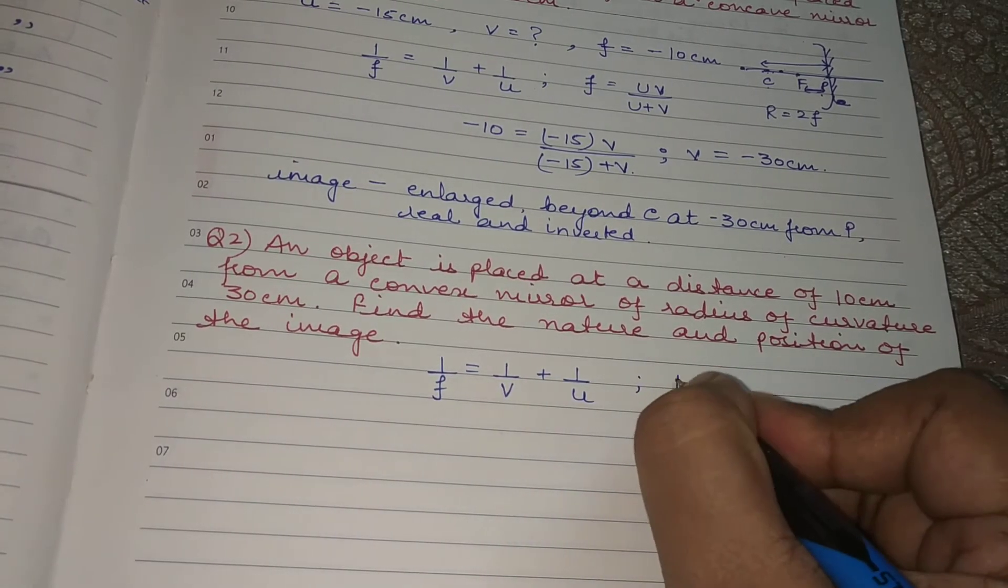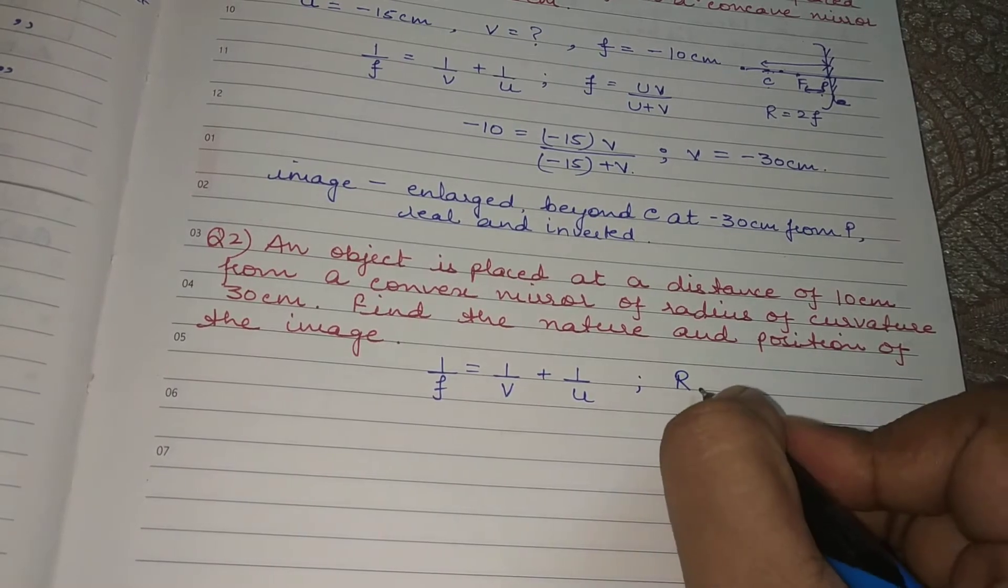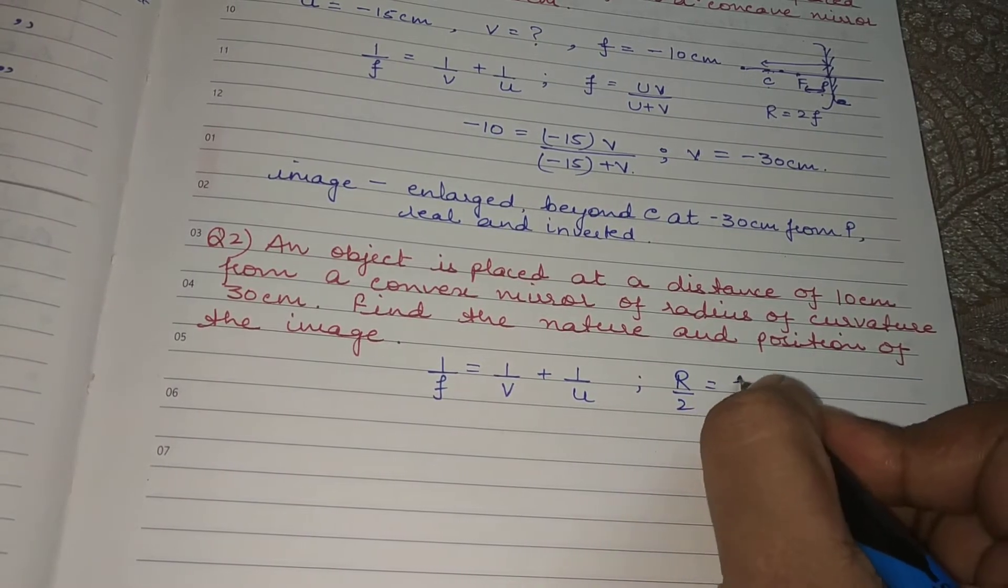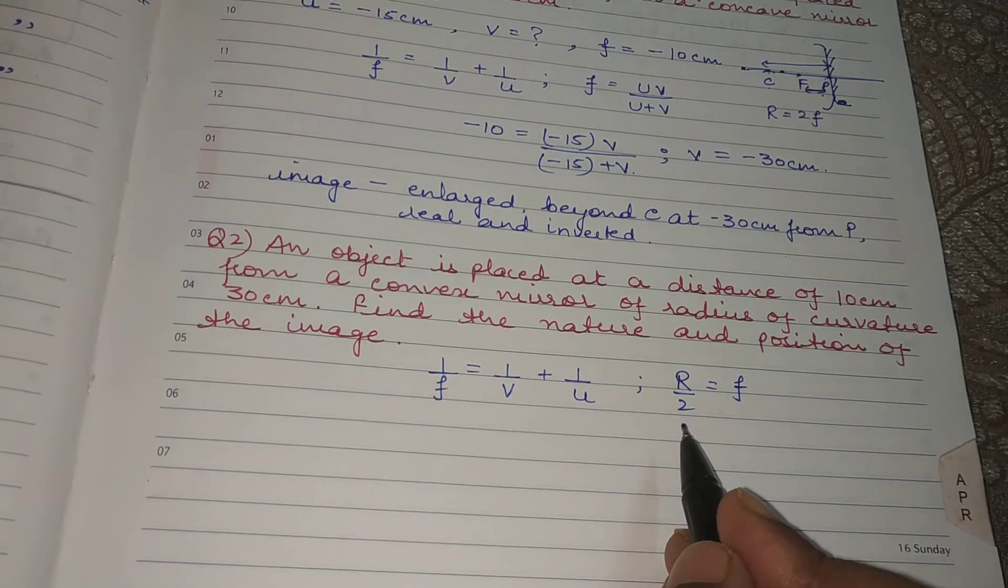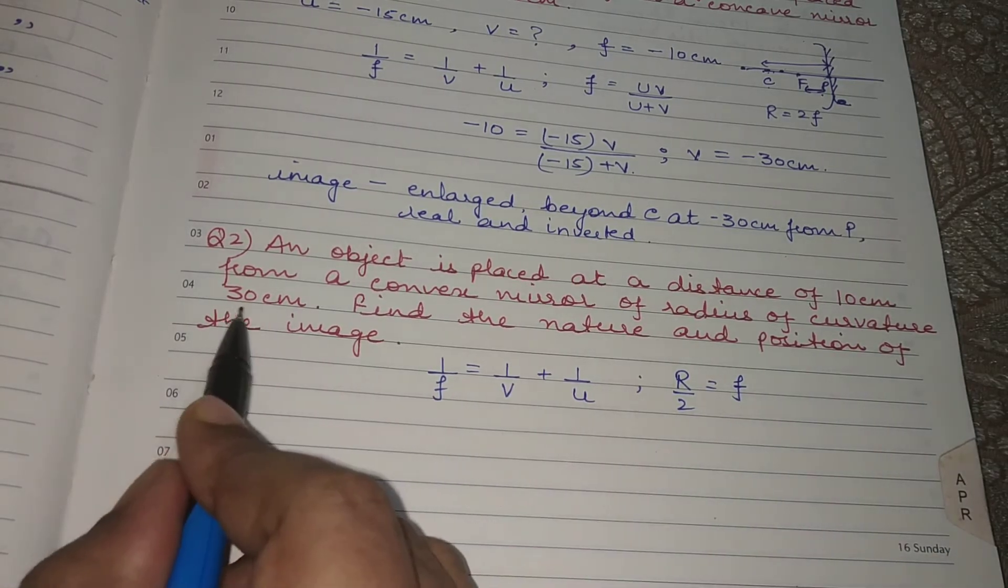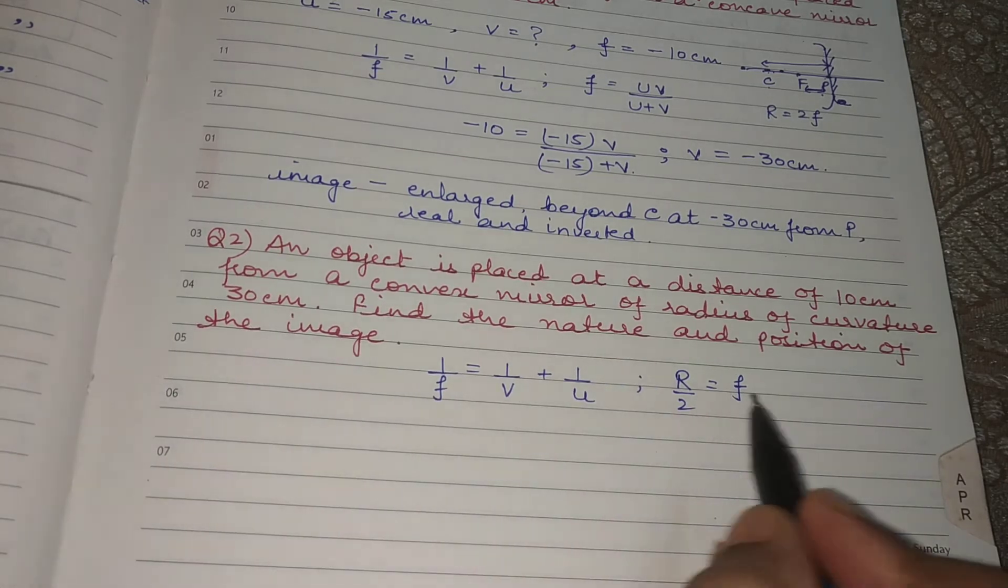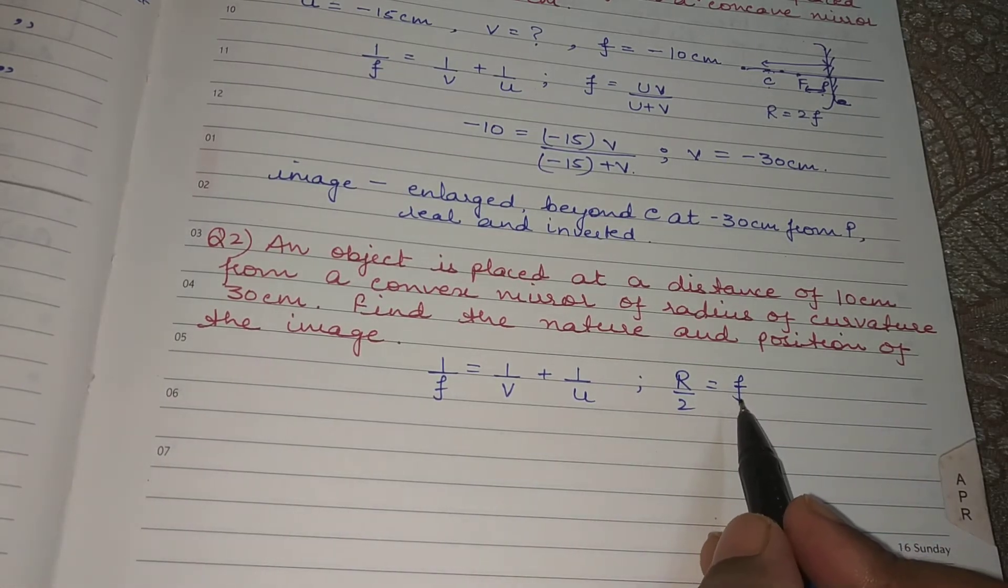That means if we know the value of r we can easily find the focal length. Focal length is half of radius of curvature. That means if radius of curvature is 30 cm, focal length will be 15 cm.